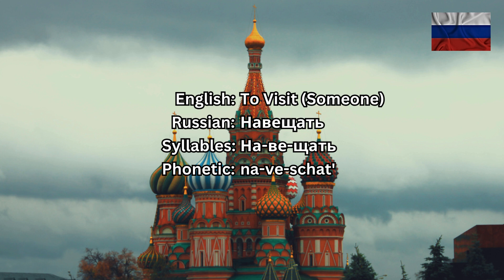We're going to make an example sentence using the conjugated form of this verb. The conjugated form will be present simple in Russian, first person plural — meaning 'we'. The sentence is: Мы часто навещаем своих друзей в другом городе. In English: We often visit our friends in another city.